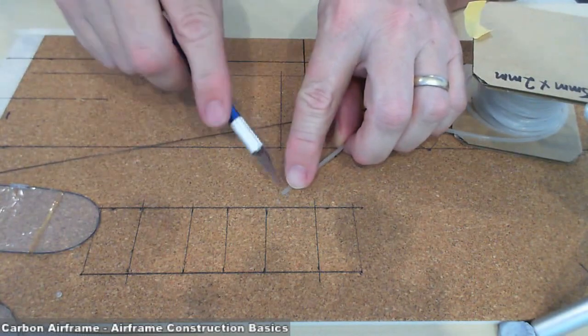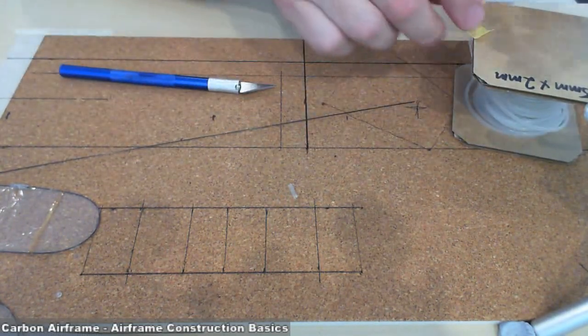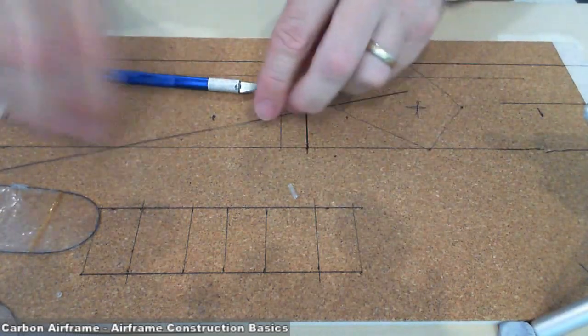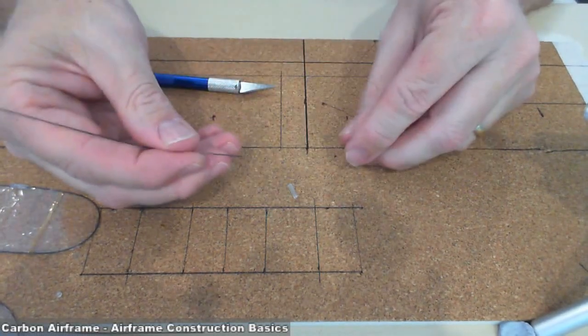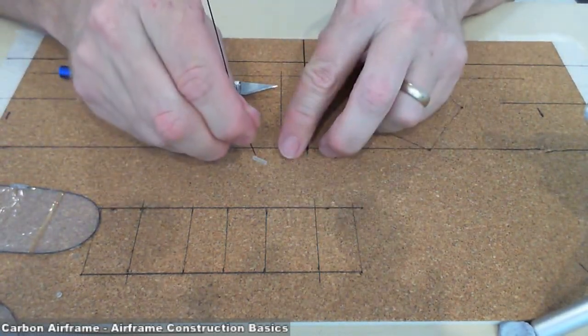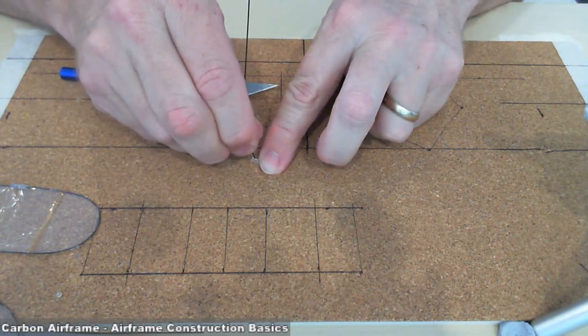Okay, so we're going to cut off a little bit of silicone rubber. This is 2mm with a 0.5mm hole. And then all we're going to do is simply push the carbon through the silicone.